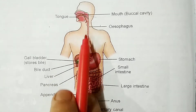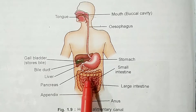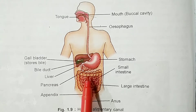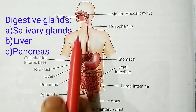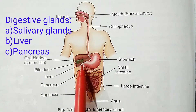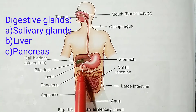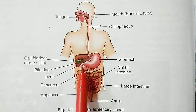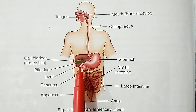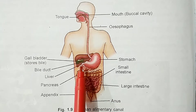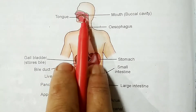Different parts of the alimentary canal are specialized to carry out the process of digestion and absorption. The salivary gland, liver, and pancreas are the associated glands. They also help in the process of digestion and mainly supply enzymes to break down food.